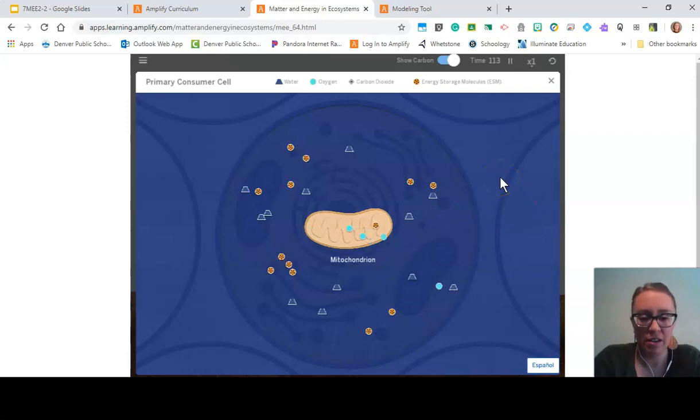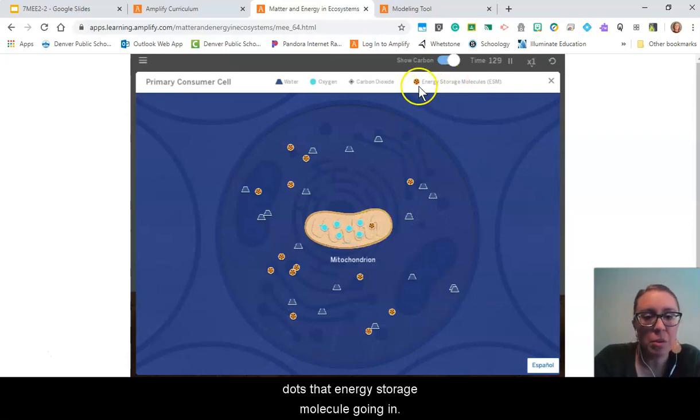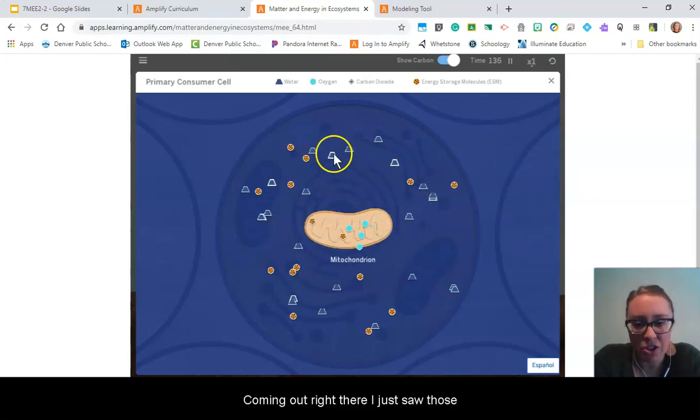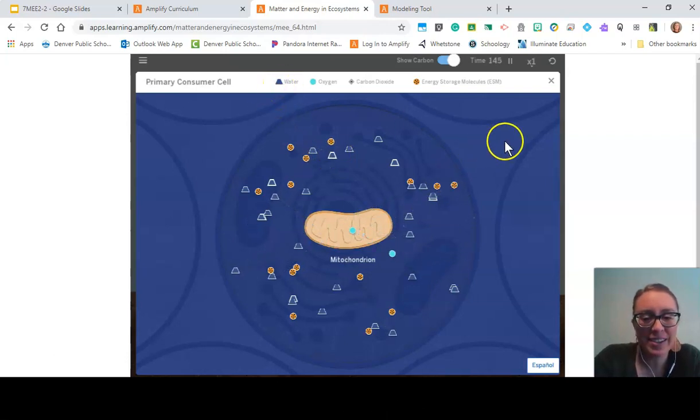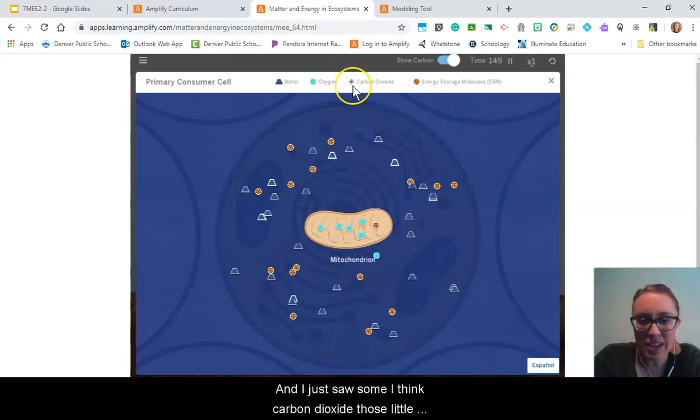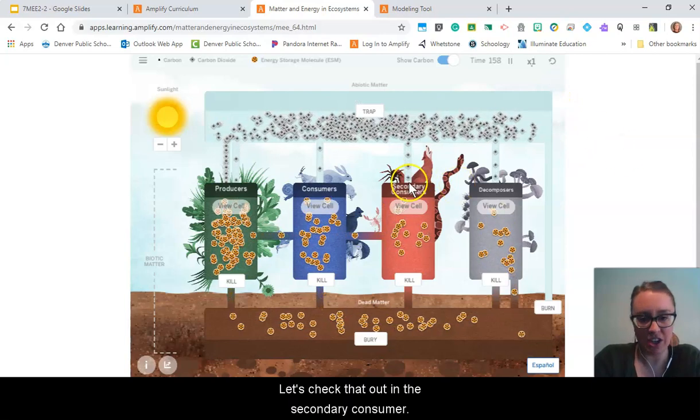There's a mitochondrion and I'm watching things go in with those little blue light blue circles for oxygen going in. I'm also seeing that orange one with the black dots, that energy storage molecule going in. Coming out I just saw those trapezoid shapes that are blue, that's water. And I just saw some carbon dioxide, those little diamonds coming out.